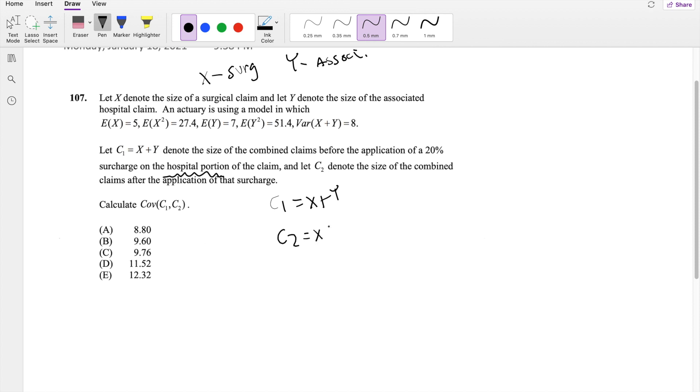So that's going to be equal to X just as normal, but then Y is going to be more expensive by 20%, so that's going to be 1.2 times Y. Because if you just do times 0.2, that's making it smaller than the original one, and we want it to be bigger. And then we're asked to find the covariance of C1 and C2.